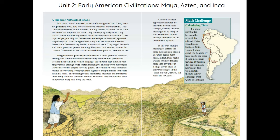Math Challenge — Calculating Time: It is about 2,300 miles between the present-day cities of Quito, Ecuador and Santiago, Chile. Today, it takes about five hours to fly from one to the other. If Inca messengers traveled 100 miles a day, approximately how many days would it take them to deliver a message from Quito to Santiago?